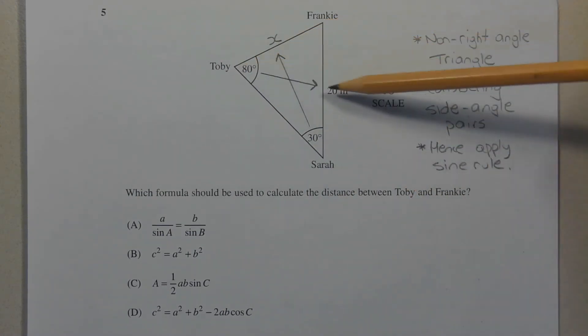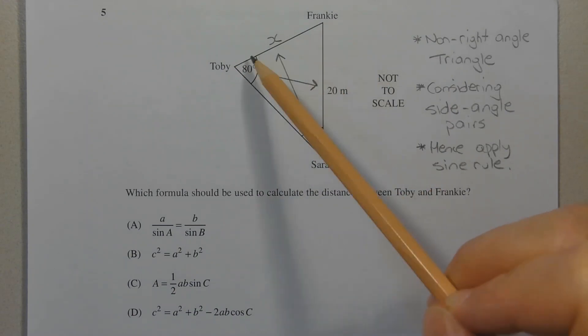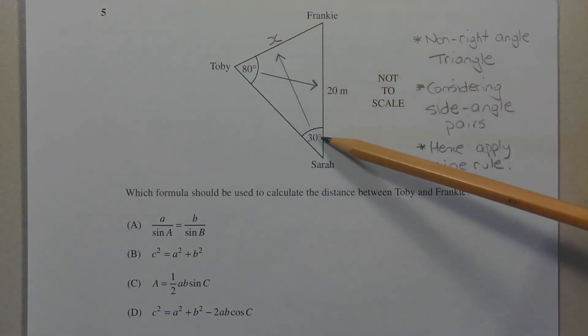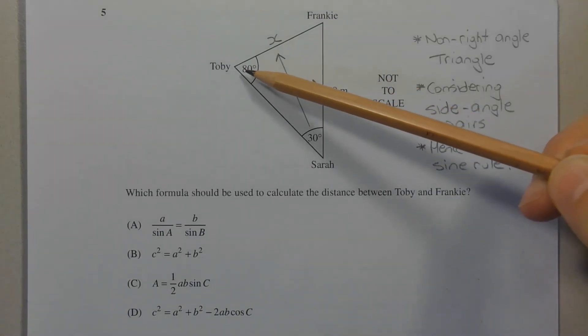Note the side angle pairs. So this side here, which I've labelled with an X, this X is paired with 30 degrees and this length here, 20 metres, is paired with 80 degrees.